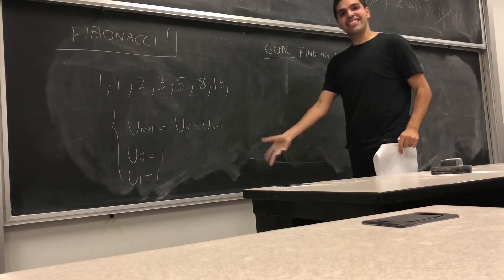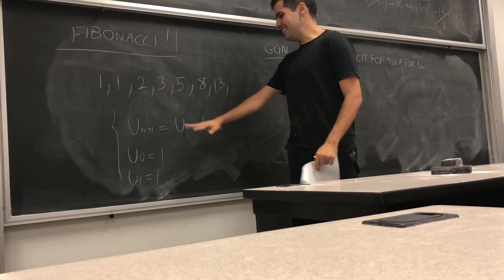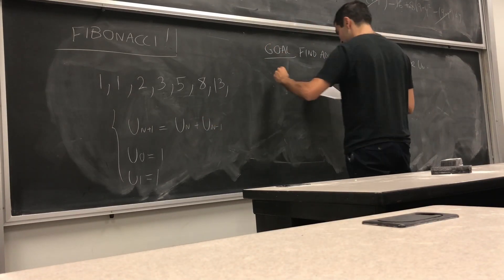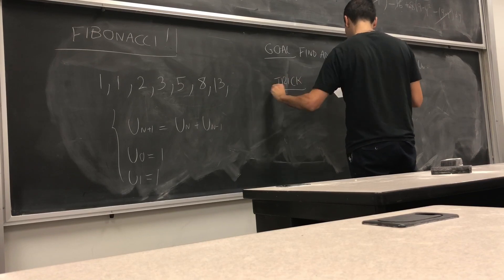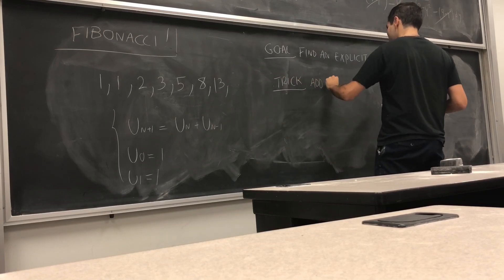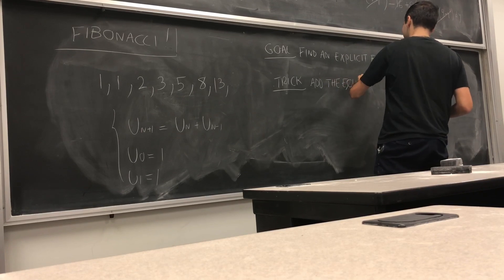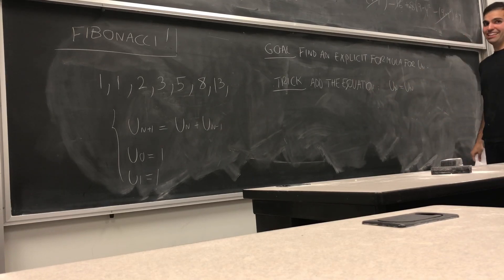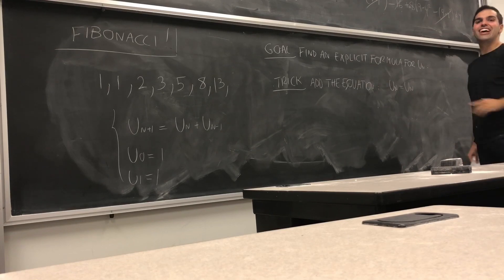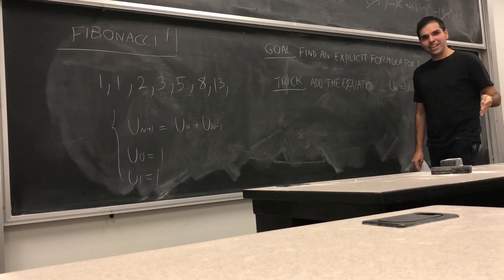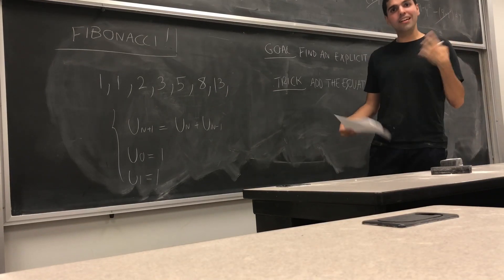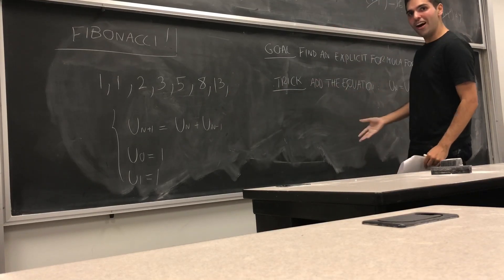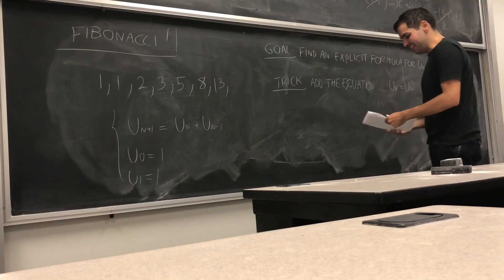Here's the trick — it seems like a very stupid trick, but it's actually very efficient. Let's take this equation and add another equation to it. Namely, let's add the following one: u_n equals u_n. There is a reason I'm doing this: linear algebra deals with systems of equations, and here we just have one equation. To make it a system, let's add this trivial equation.